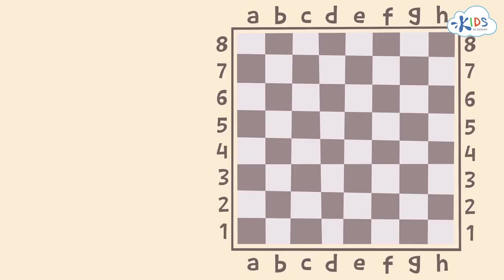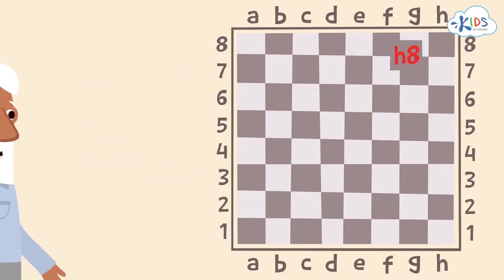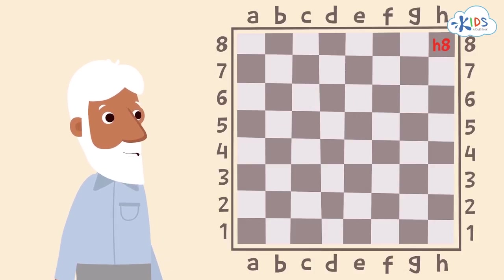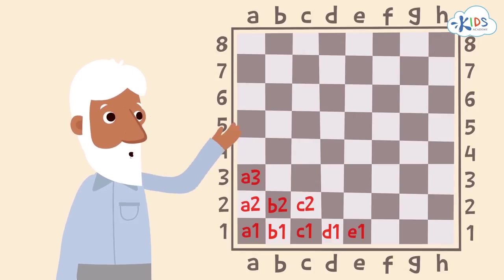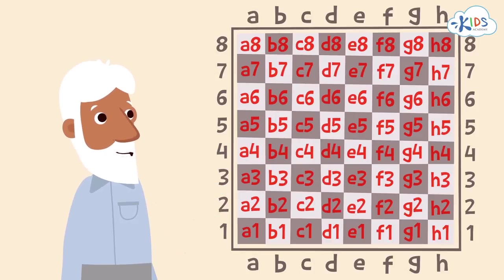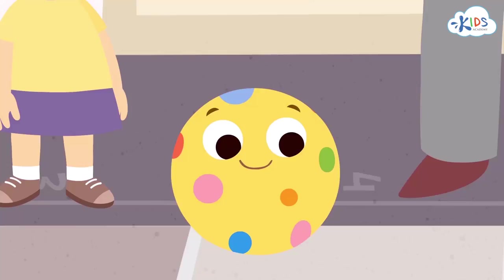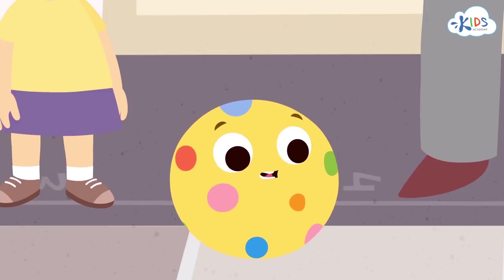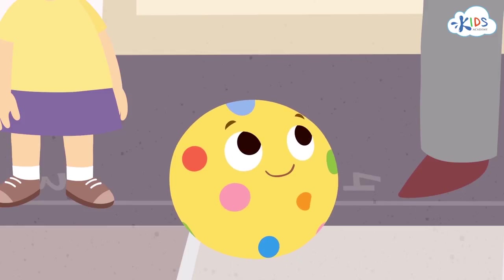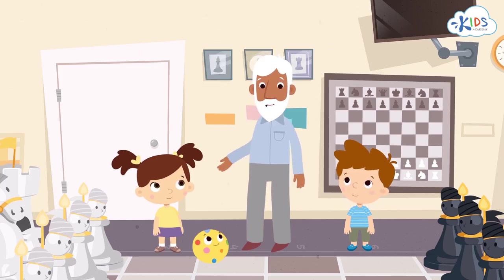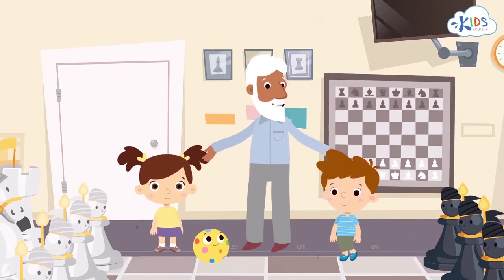The last square is called H8. It's a dark square too, and at the beginning of a game, a black rook stands on it. All the chess space is between those two squares. It means there are as many names as there are squares! Once you know the square names, you can write down the position of each piece.